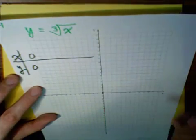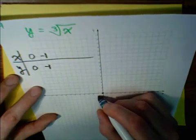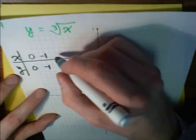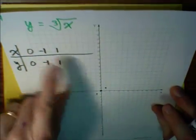Well, 0, the cube root of 0 is 0. So there's a point. The cube root of negative 1 is negative 1. So there's a point. And the cube root of 1 is 1. So that's pretty easy, those numbers.